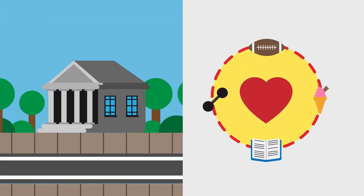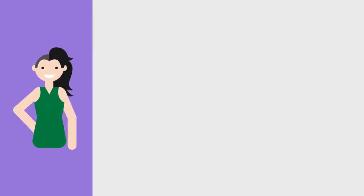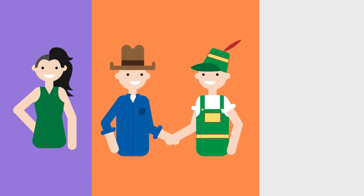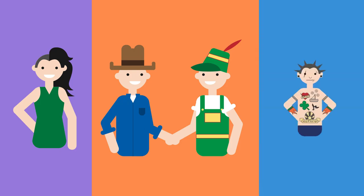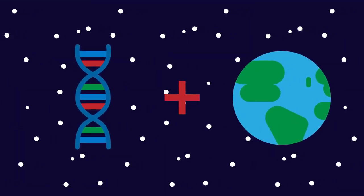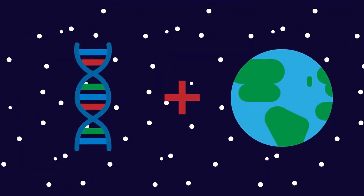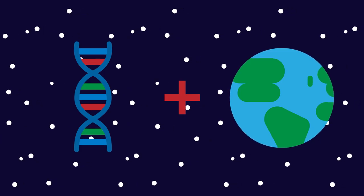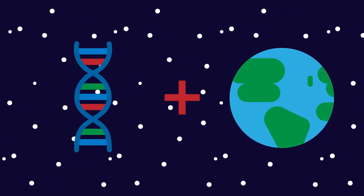Some variation is due to the environment or lifestyle of the organisms. Examples in humans are hair length — it depends on how short you decide to cut it — your accent, as this is linked to where you live, and if you have any piercings, tattoos, or scars. These are characteristics that you acquire throughout your life.